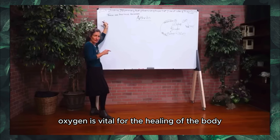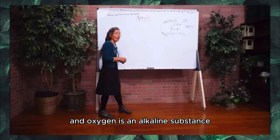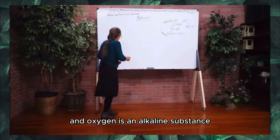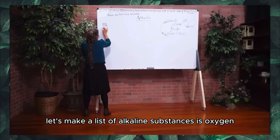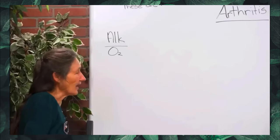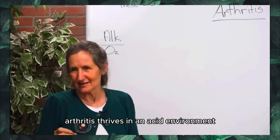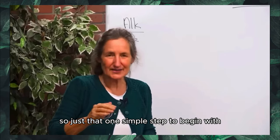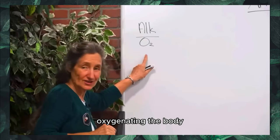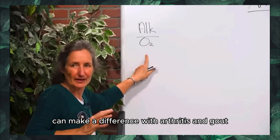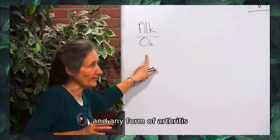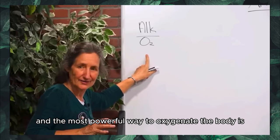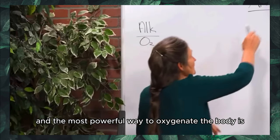Oxygen is vital for the healing of the body, and oxygen is an alkaline substance. Let's make a list of alkaline substances — oxygen is one. Arthritis thrives in an acid environment, so that one simple step of oxygenating the body can make a difference with arthritis and gout. The most powerful way to oxygenate the body is exercise.